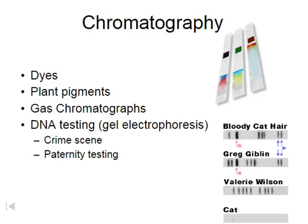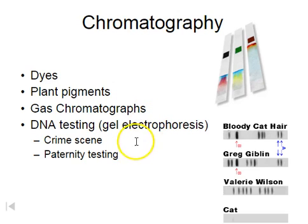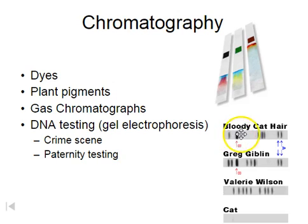If you want to separate small individual compounds, a good technique is chromatography. Chromatography is used to separate dyes — we can use paper chromatography to run a solvent up the paper, which removes different dyes based upon their solubility. We can also use chromatography for plant pigments, which is a lab we do second semester when studying plants. Gas chromatographs work on the same principle, separating gases based upon molecular size. DNA testing using gel electrophoresis is another technique we do second semester, separating DNA fragments based upon their sizes using electrical charges.